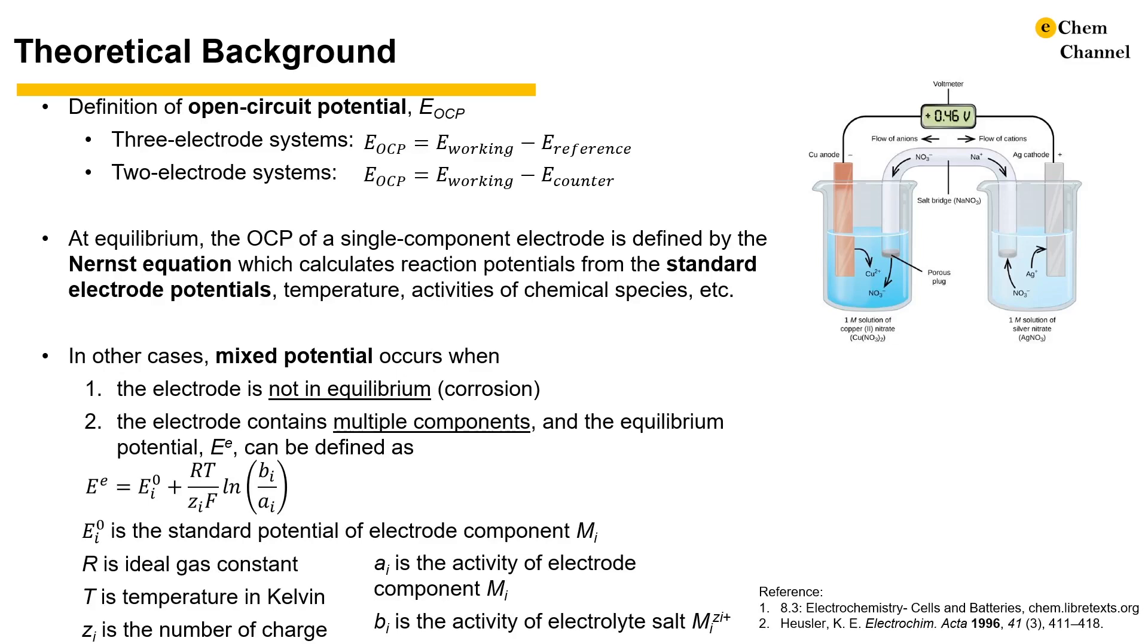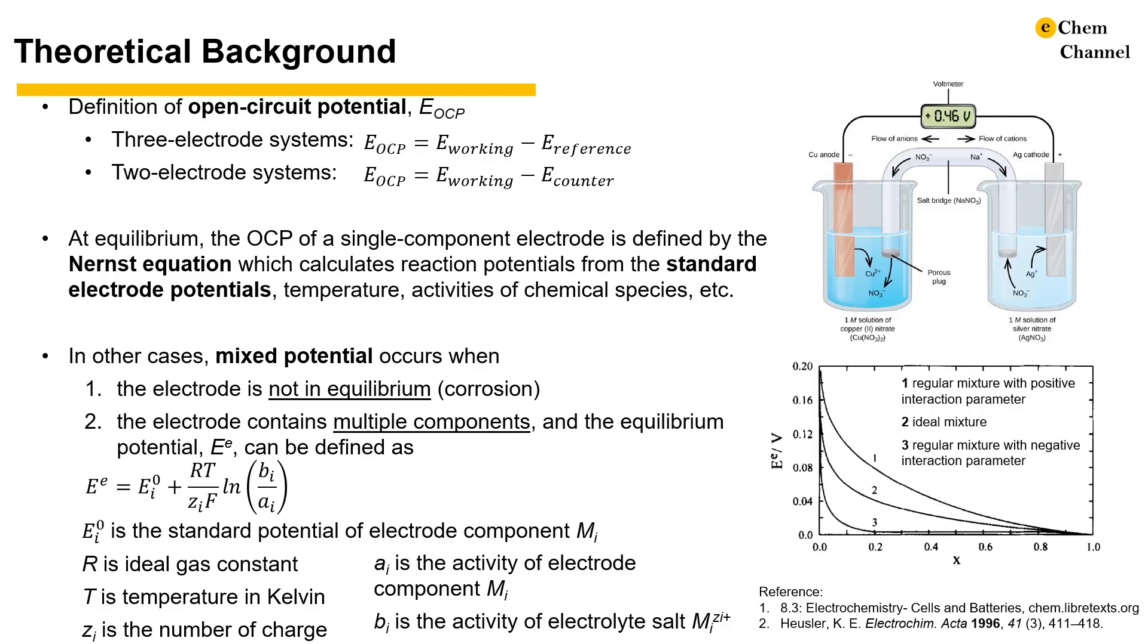While the electrode contains multiple components and can reach equilibrium, the equilibrium potential of one component, i, may be expressed by the following modified Nernst equation. Here, we assume the component Mi with activity ai is in contact with an electrolyte containing the ion Mi^zi+ with activity bi. An example of the equilibrium potential of a binary mixture with respect to the standard electrode potential of component 1 is shown on the right, with three curves representing different interaction conditions.